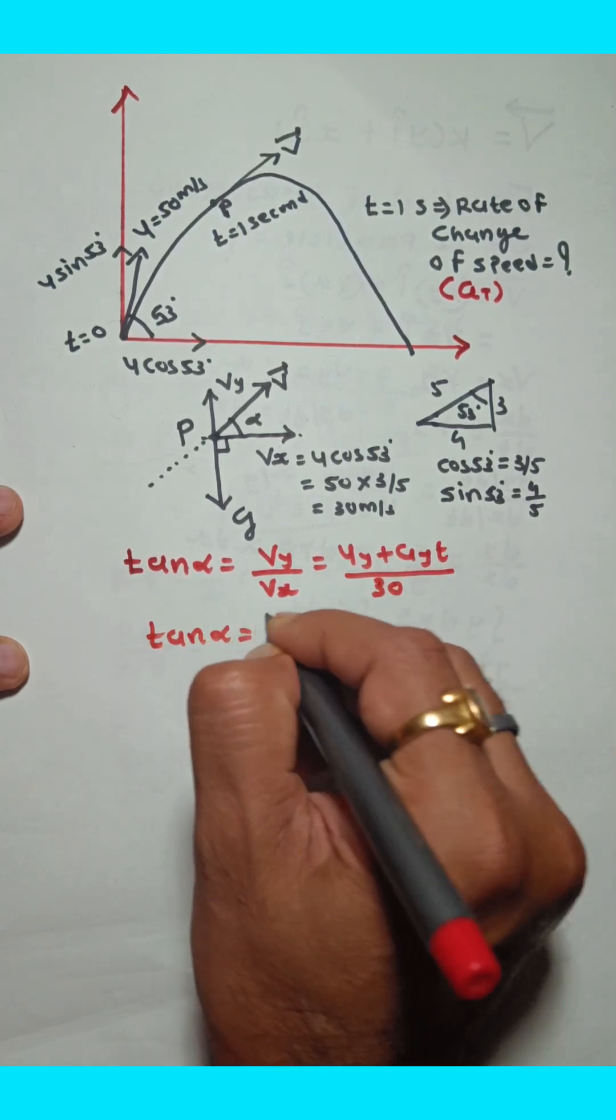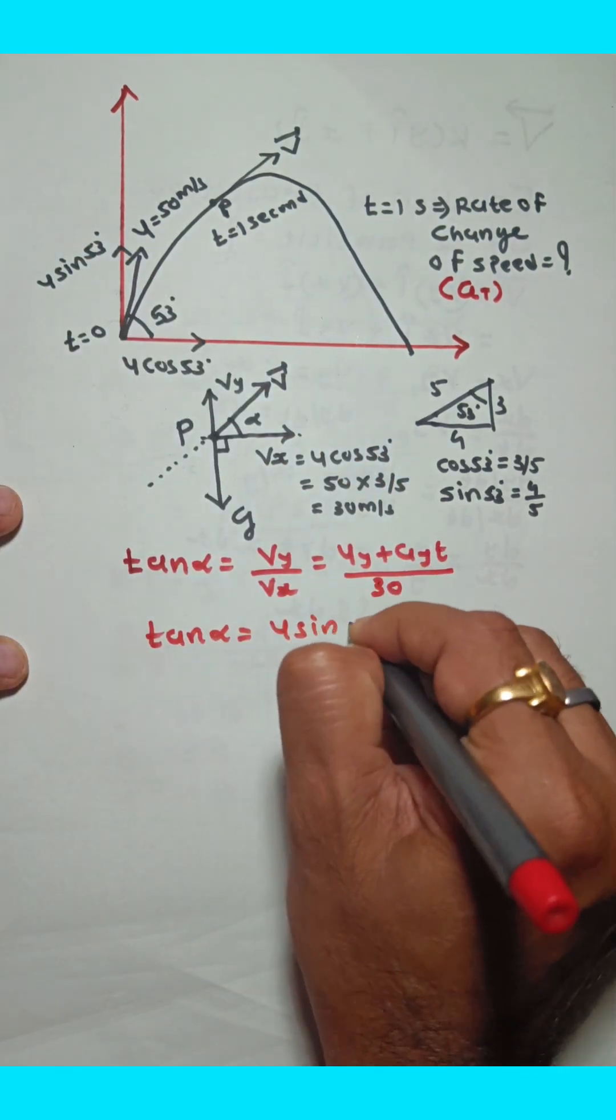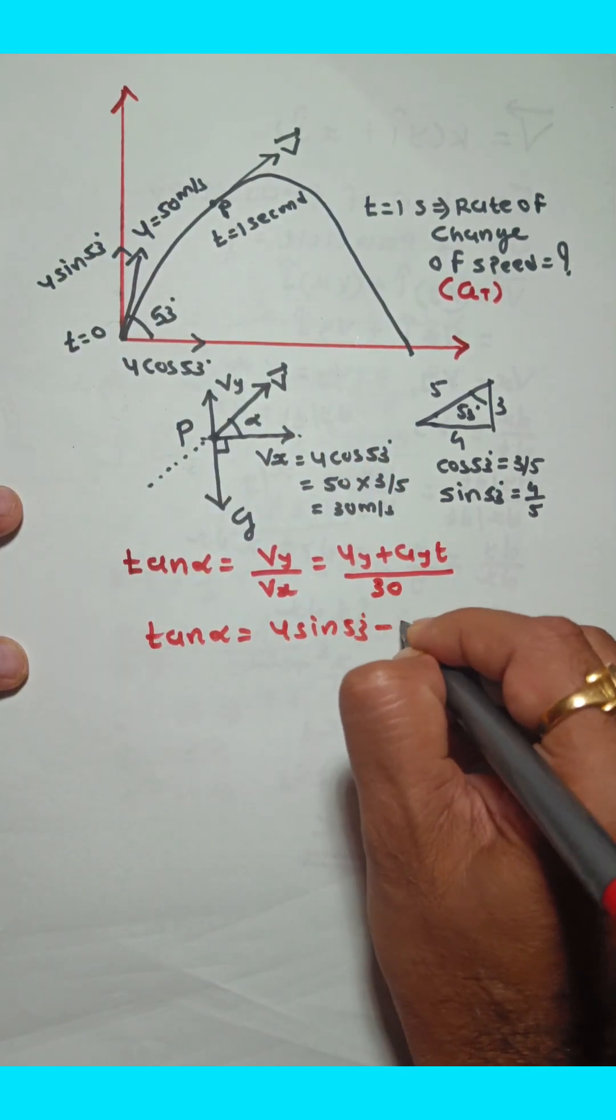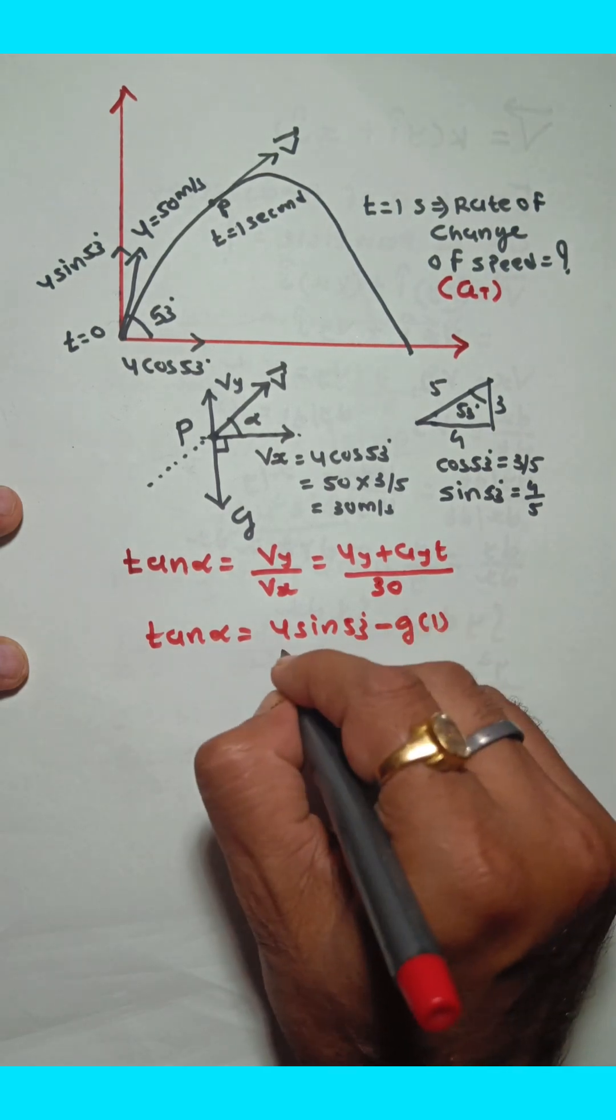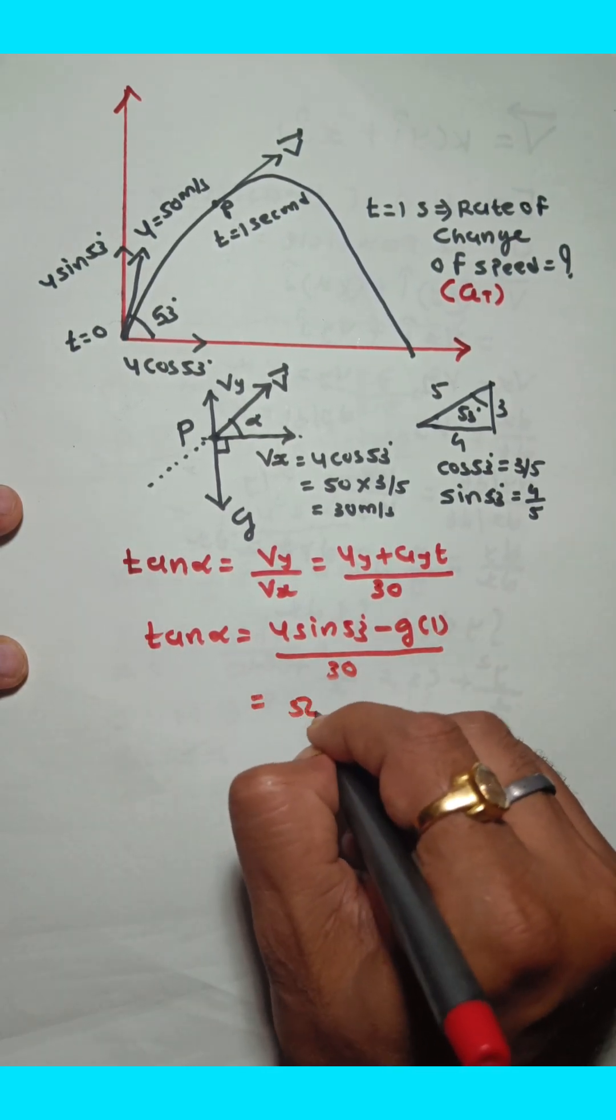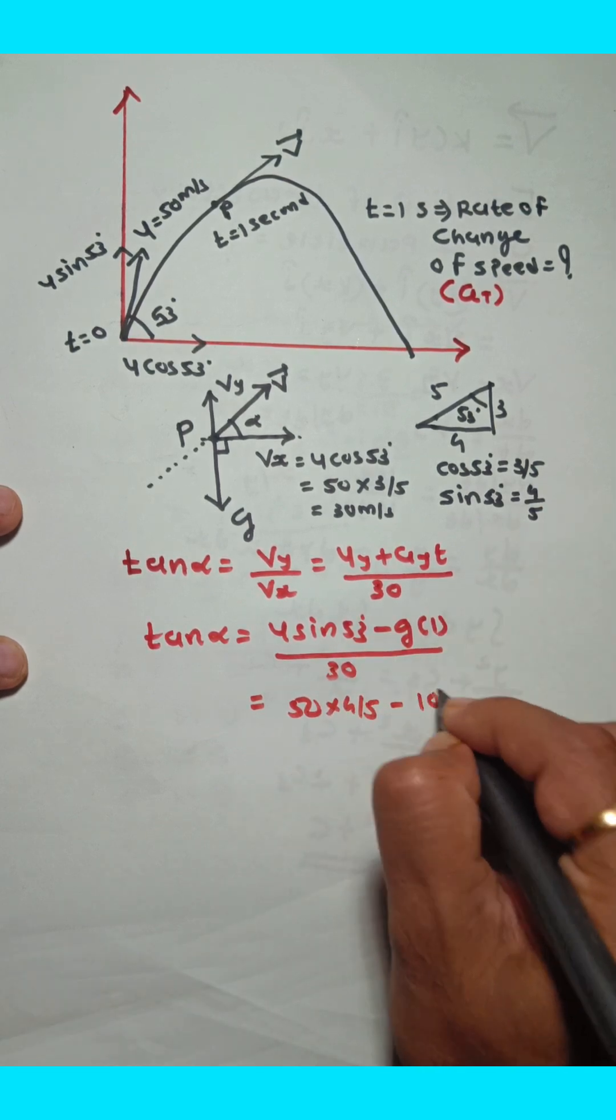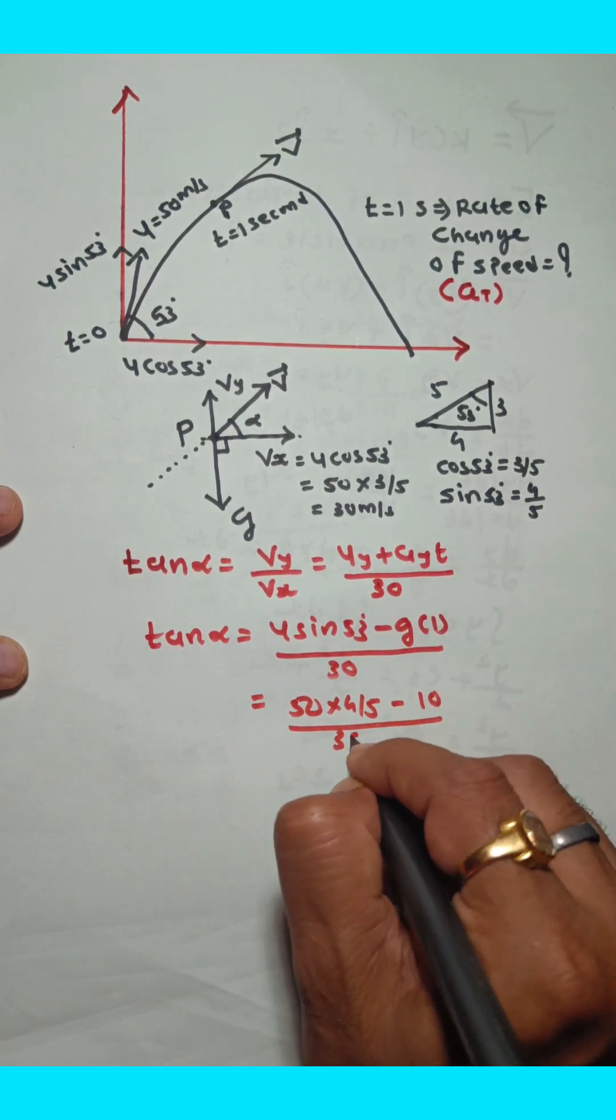So tan alpha equals—what is uy? The y component is u sin 53. ay is minus g, and t is 1 second, all divided by 30. Since u is 50, sin 53 is 4/5, and g is 10, we have (50 × 4/5 - 10) / 30.